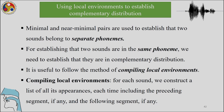It is useful to follow the method of compiling local environments. For each sound, we construct a list of all its appearances, each time including the preceding segment and the following segment. For any given data set, it is important to do this work to establish whether two sounds are in an allophonic relationship or if they are different phonemes. The method of finding complementary distributions is to compile local environments and follow the data carefully.